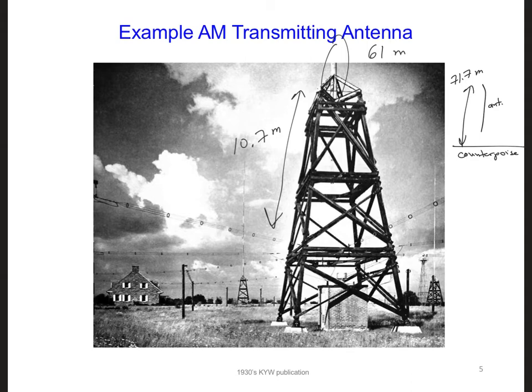This total length turns out to be about lambda over 4, where the wavelength was 294 meters. As a result, this antenna is approximately a quarter-wave monopole antenna over a ground plane.